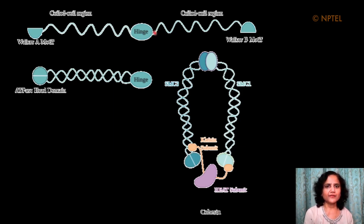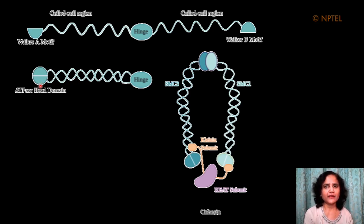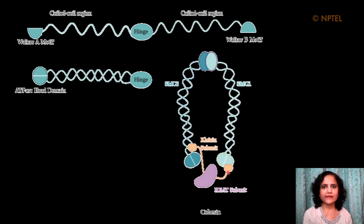Each SMC protein has a hinge region and two coiled-coil regions which connect the hinge to the Walker A and Walker B motifs. The molecule folds upon itself at the hinge, and the two Walker A and Walker B motifs come together to form the head domain that can bind ATP and has ATPase activity. The SMC proteins associate via the hinge region, and their head domains are bridged by the kleisin subunit, which closes the ring formed by the complex.